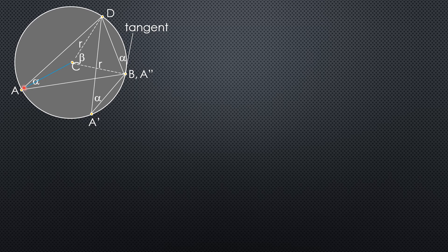Therefore, triangle ACD is an isosceles triangle because AC is the radius and CD is also the radius. If we call this angle p, then the other base angle of the isosceles triangle also has measure p.